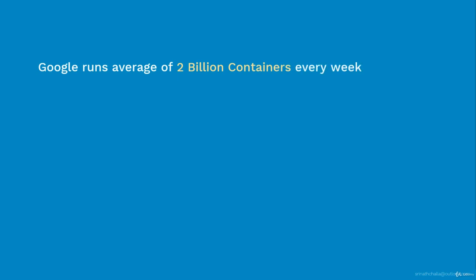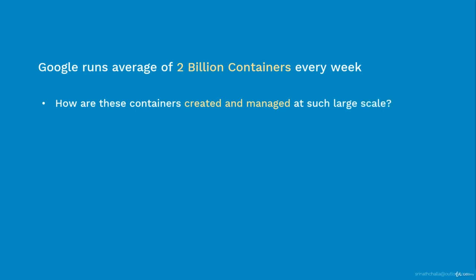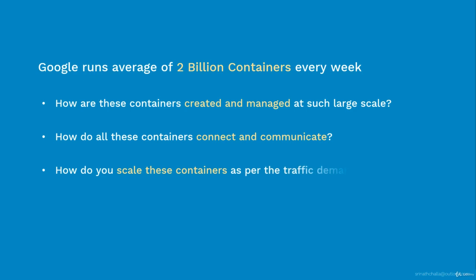Google runs an average of more than 2 billion containers per week — that is billion with a B. After hearing this for the first time, you'll immediately wonder: how are these containers created and managed at such a large scale? How do all these containers connect and communicate together? How do you scale these containers as traffic demand goes up and down?